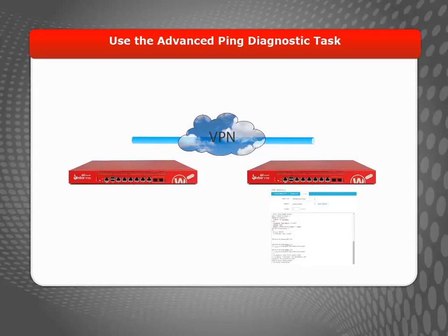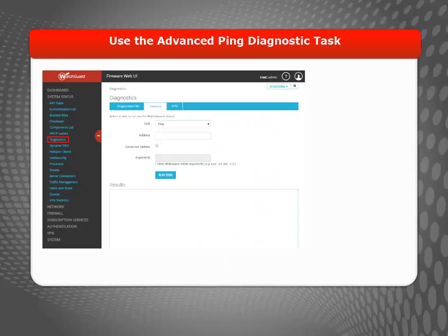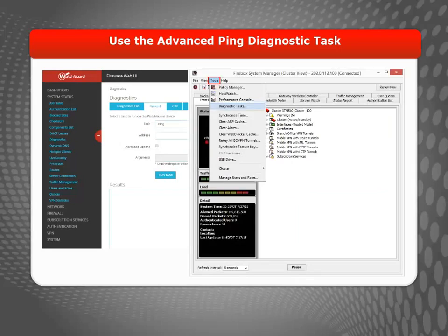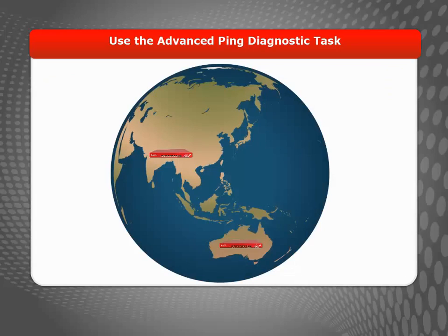To generate traffic through the tunnel, you can use ping. For troubleshooting, it is convenient to use the ping diagnostic task to do this right from Fireware Web UI or Firebox System Manager. With this task, you can generate ping traffic from a Firebox interface at the local end of the tunnel to another IP address at the other end of the tunnel. Then, you can run the VPN Diagnostic Report on the remote device.